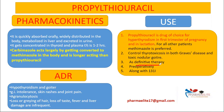Propylthiouracil can be used as definitive therapy; in Graves disease patients, remission can occur in about half of cases within one to two years. It can also be given preoperatively in patients undergoing surgery for hyperthyroidism or goiter. Additionally, it can be used alongside iodine-131, providing initial control for one to two weeks before radioiodine dosing, and then resumed afterward.